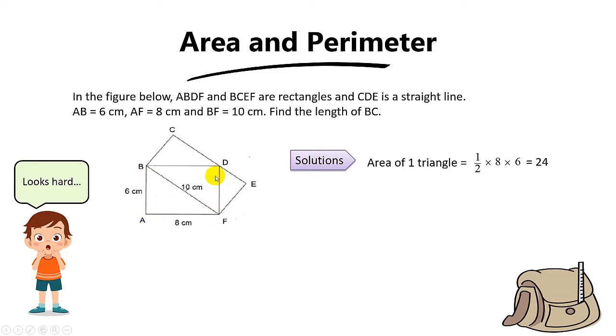So the area of one triangle is 24 cm squared. And we know that in a rectangle, when you cut a line across, these two triangles share the same area. So this triangle over here is also 24 cm squared.